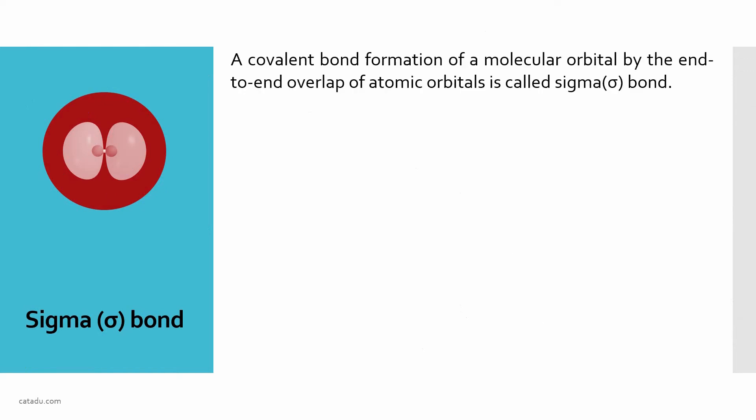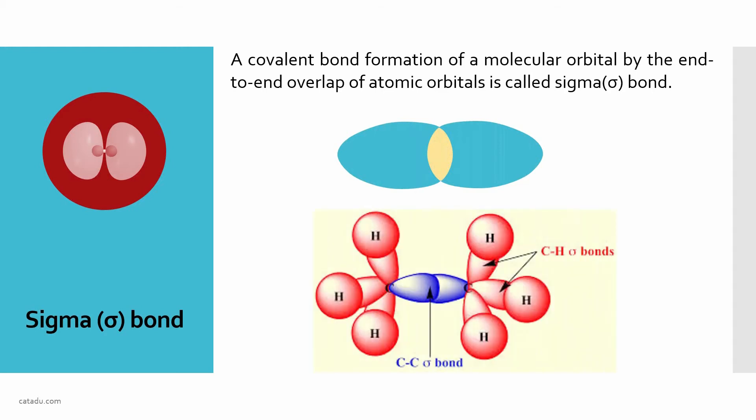Sigma bond is one type of covalent bond. This is formed by the end-to-end overlapping or direct overlapping of atomic orbitals. Let's consider this is the orbital and another orbital. These two are overlapping as shown here.